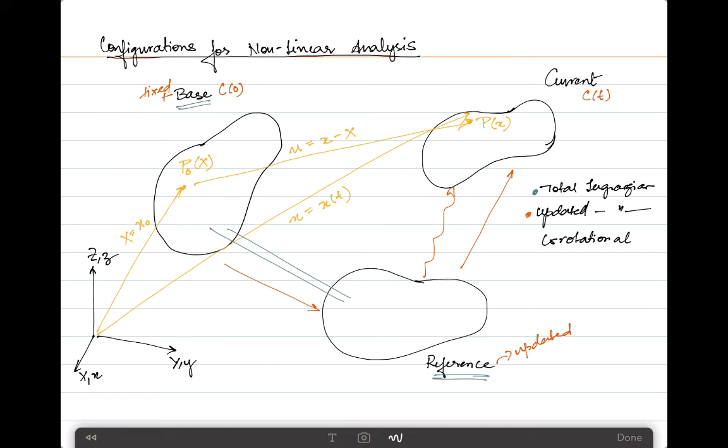The global coordinate system always remains fixed, but this elemental coordinate system translates and rotates. The element deformation is decomposed into a rigid body component, identical to the rigid body motion of the local system, and a straining component described by degrees of freedom in the local system.